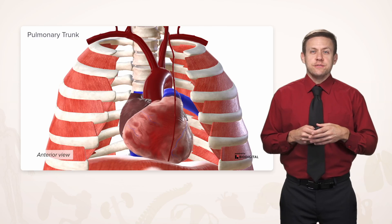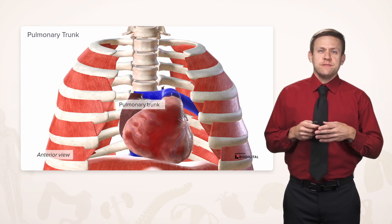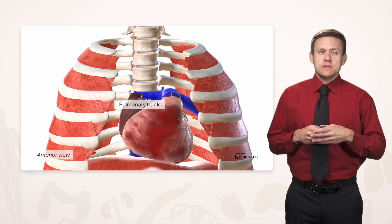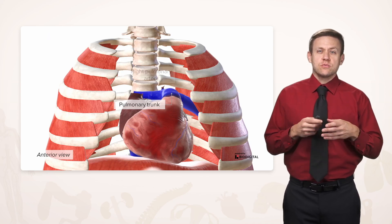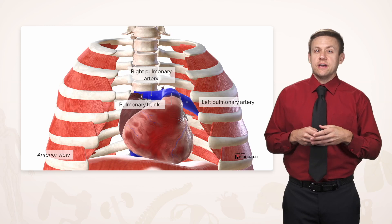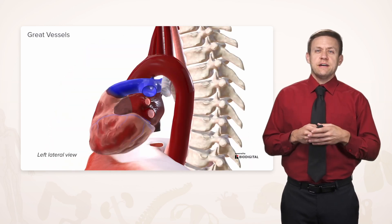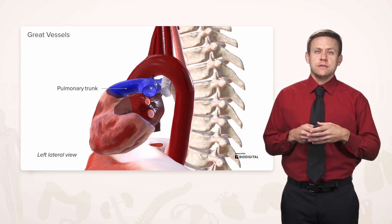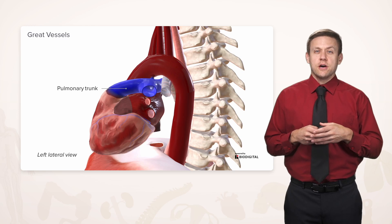We'll go back to an anterior view and remove the aorta to see the pulmonary trunk and its branches better. The pulmonary trunk is pretty short before it branches into the right and left main pulmonary arteries, forming almost a T-shaped intersection where it bifurcates into the left and right pulmonary arteries.